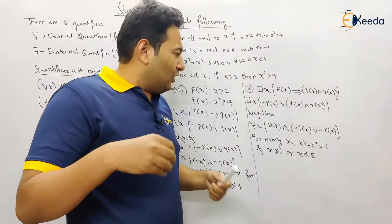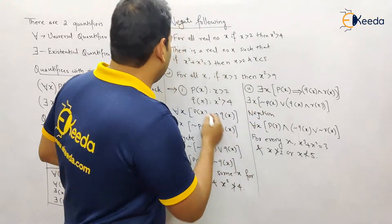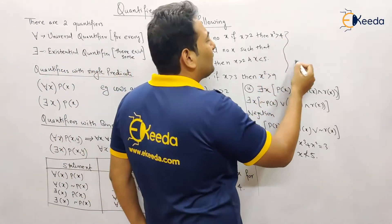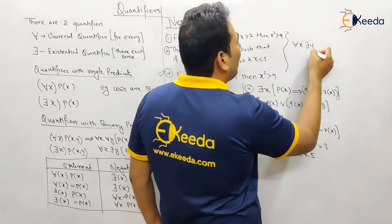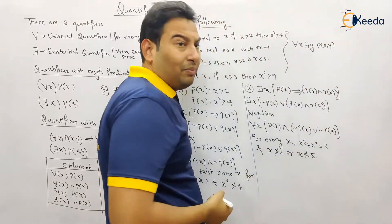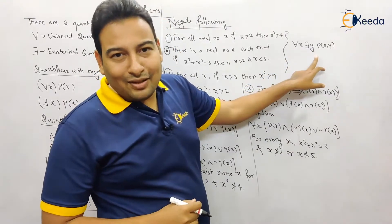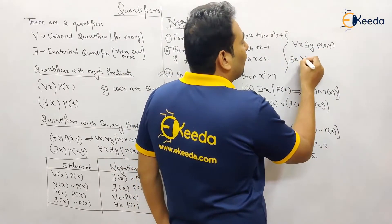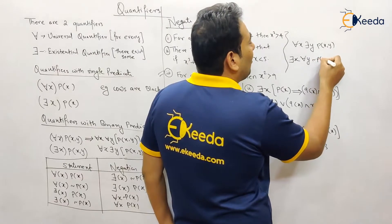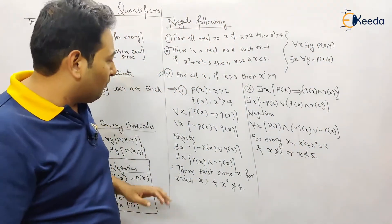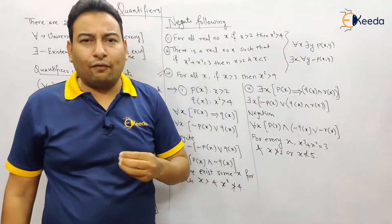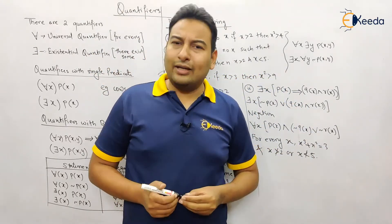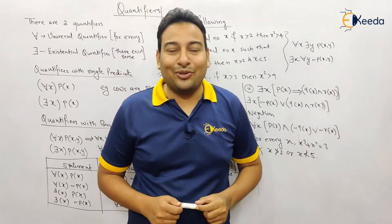Statement 3 is similar to problem 1 and is given as a homework problem. Also note: for a statement like 'for every x, there exists some y, P(x, y),' the negation becomes 'there exists some x, for every y, P(x, y) is not true.' When both universal and existential quantifiers are present, take negation accordingly. That covers everything about quantifiers — it's a simple but important topic.